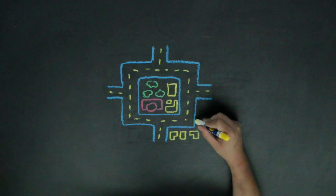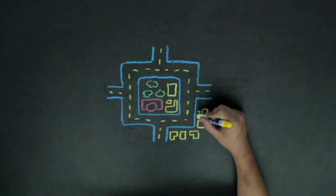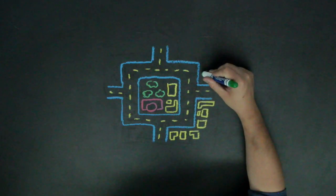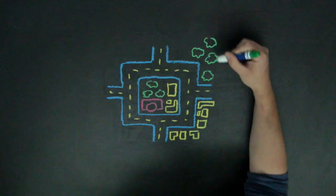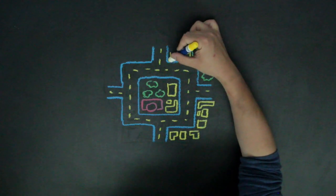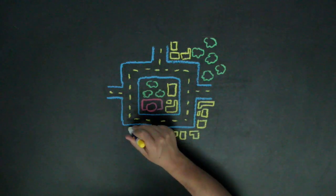After students have agreed and aptly justified the arrangement of their community structures and features, they can glue or tape everything down. They can also include standard map features like a key, as well as the scale they used. For example, one grid square equals ten feet.